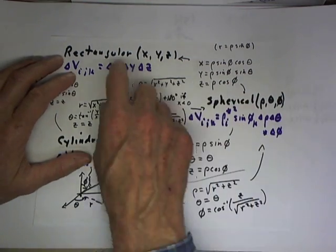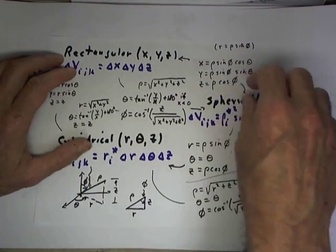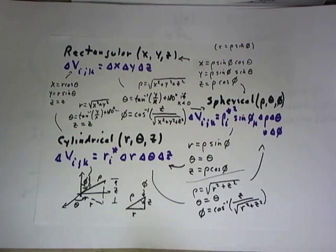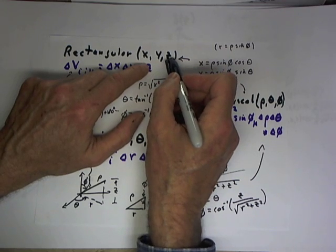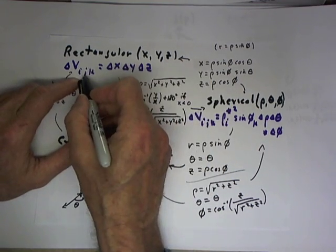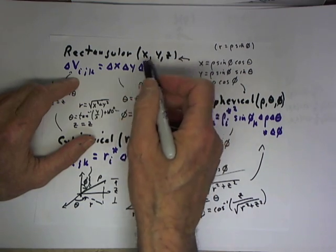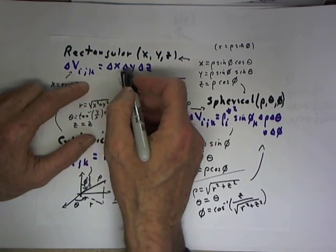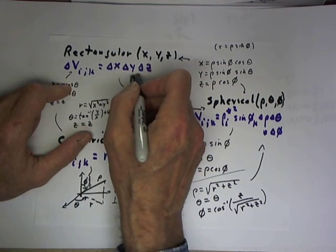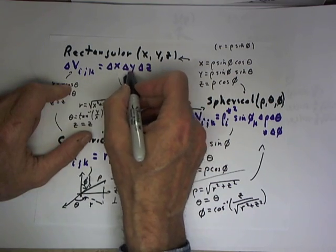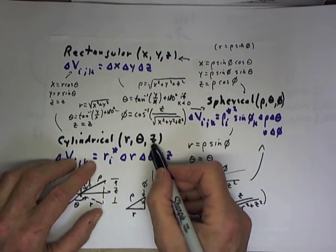Before we go on, it's worth summarizing relationships among rectangular, spherical, and cylindrical coordinates. Rectangular coordinates are x, y, z. We have a typical volume increment delta x by delta y by delta z. There's no need to refer to the sample point in rectangular coordinates — it has no effect on the size of the volume increment.